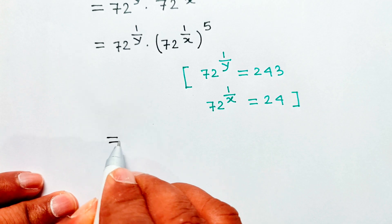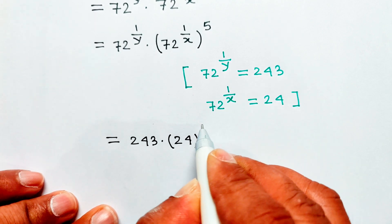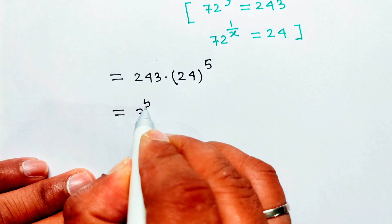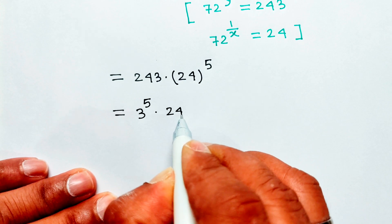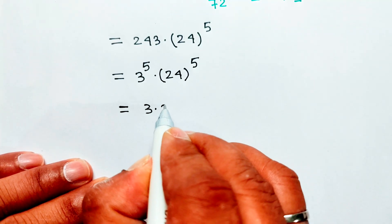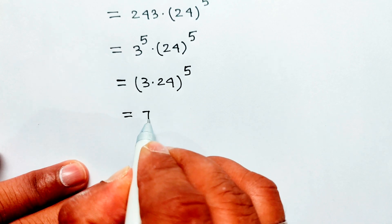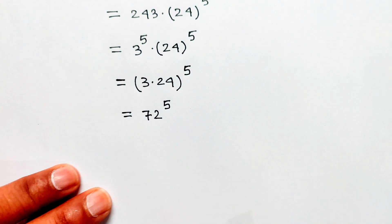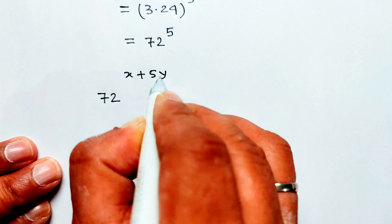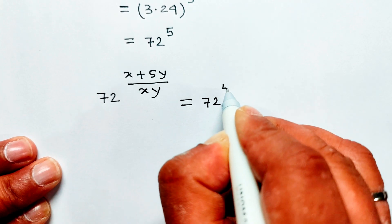Then equal 243 into 24 whole to the power 5. Now 243 equal 3 to the power 5, so this becomes 3 to the power 5 into 24, whole to the power 5. Then equal 3 into 24, whole to the power 5, equal 72 to the power 5. Therefore 72 to the power 5.